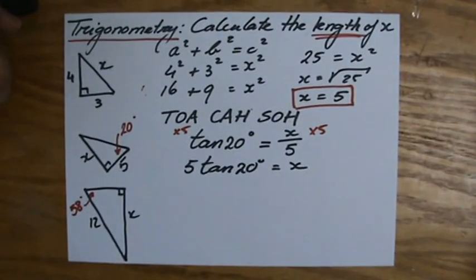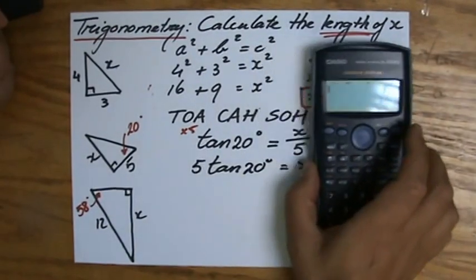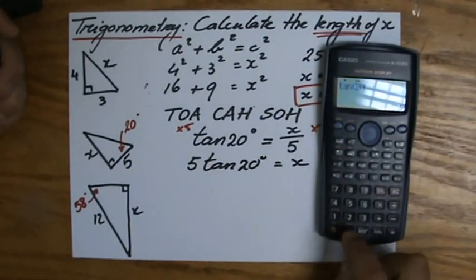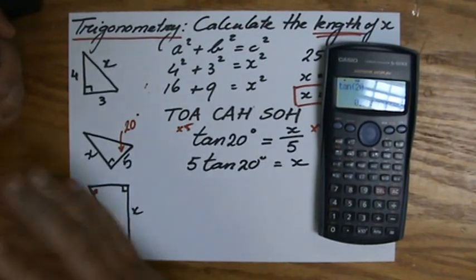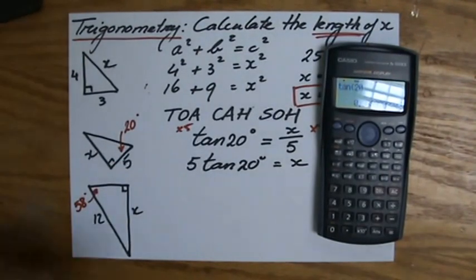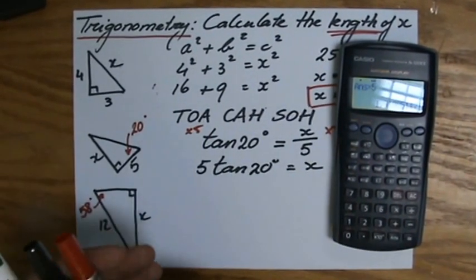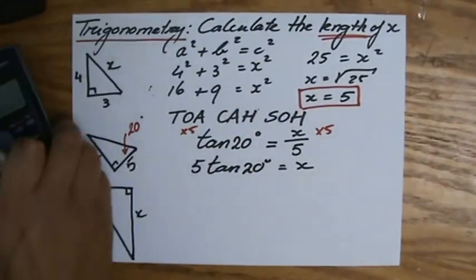Now, we need a calculator for that. So, you have a calculator with you. So, I press the tangent of 20, equals, and they give me this decimal, 0.3639702343. But I still got to times that by 5, equals.